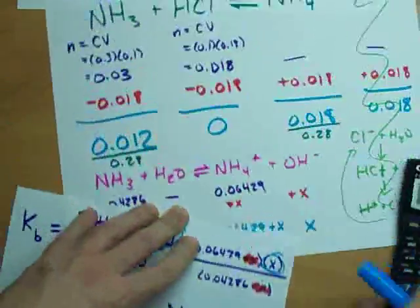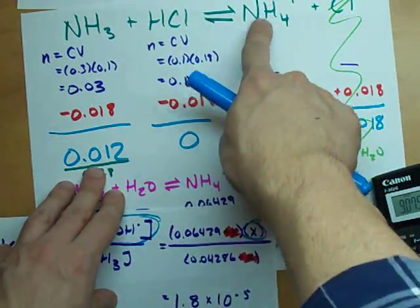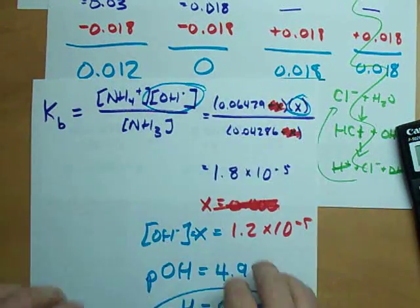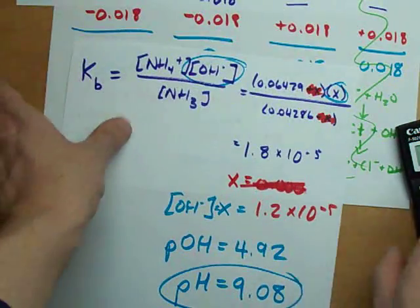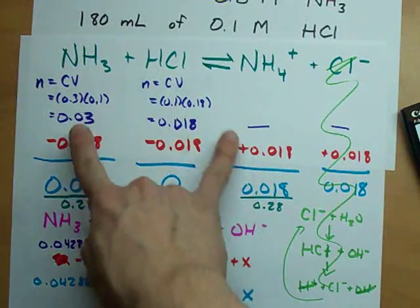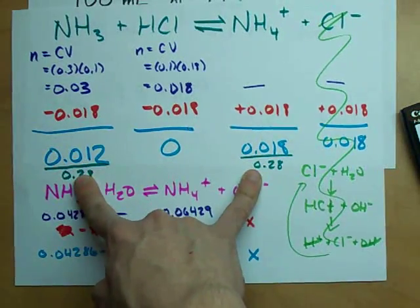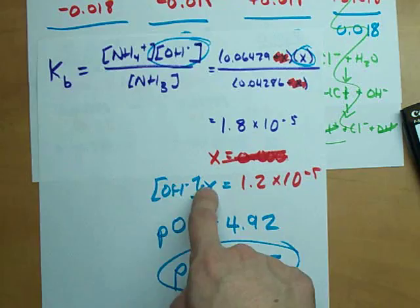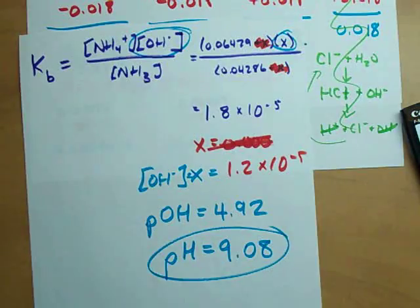So my strategy for solving titration problems: find the number of moles you start with, find the number of moles you end with, convert to concentrations, do an ICE table for any of the things you have left over that affect pH, solve for x which will either be OH- or H+, and then get your pH or pOH from there. Just under 10 minutes. Best of luck to you.